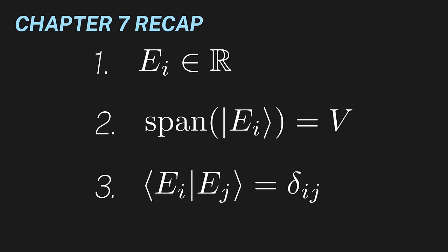Last, the eigenvectors must be orthogonal, otherwise they wouldn't be definite states. These last two allow us to conclude that observables have an orthonormal eigenbasis.